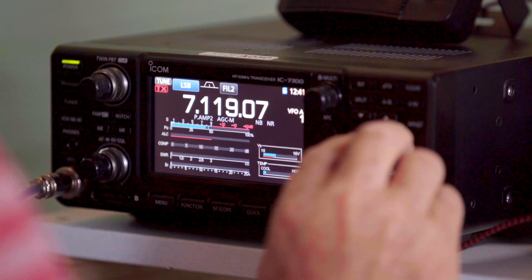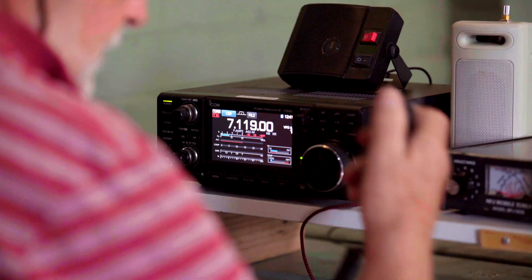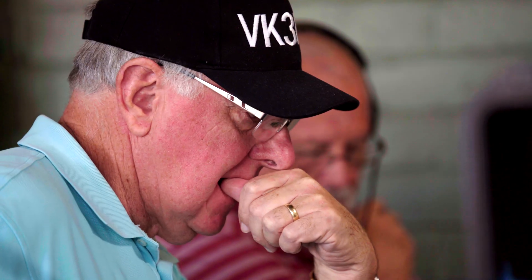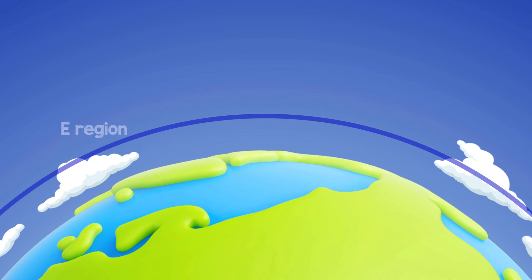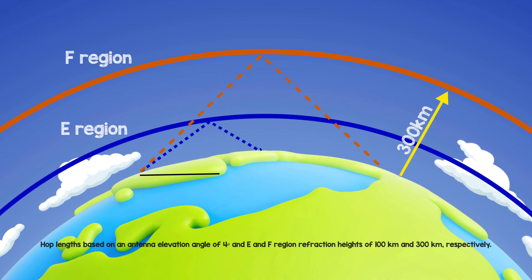The F2 layer is the most important region for HF skywave propagation, because it's present 24 hours of the day. For long communication paths, its high altitude reduces the required number of hops, and it usually refracts the highest frequencies in the HF range.